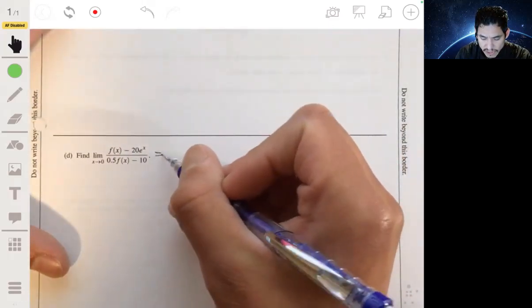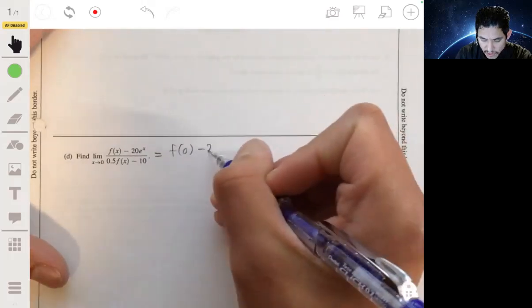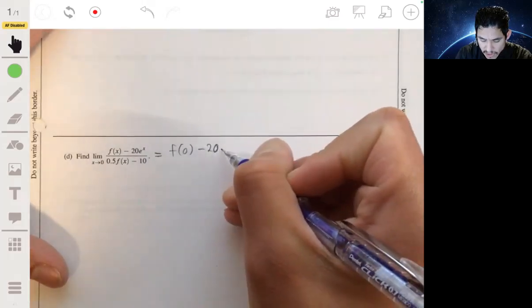Okay, so if you were simply to always first try direct substitution. If you were to plug in 0 for x, you would have f of 0 minus 20 e to the 0 over 0.5 times f of 0 minus 10.